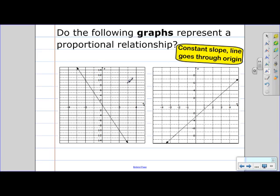Looking at this first graph, we do have a straight line and it does go through the origin, which is here. So this would be a yes.